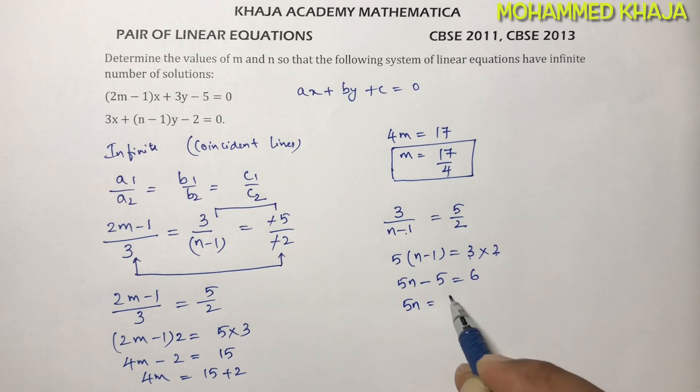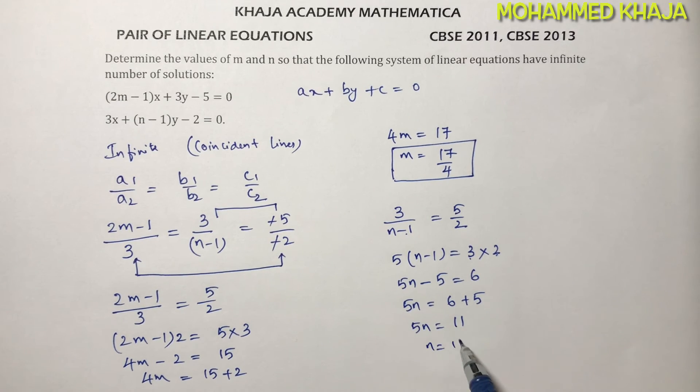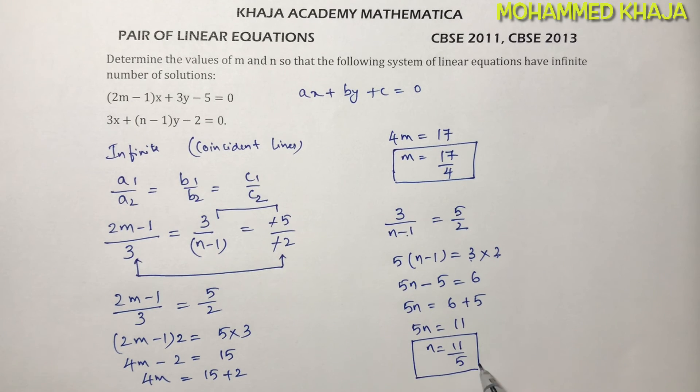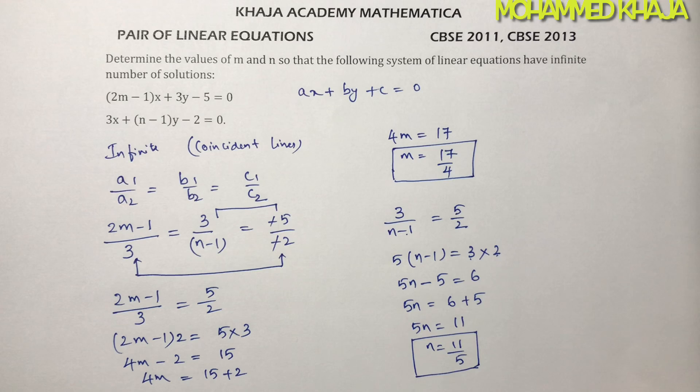So 5n minus 5 equals 6. Transposing minus 5, it becomes plus 5. 5n equals 6 plus 5, which is 11. n value is 11 by 5. Therefore, the value of m is 17 by 4 and n is 11 by 5.